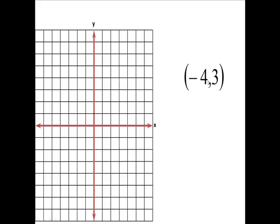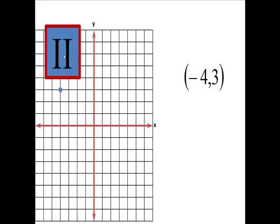If you had a point that's 4 to the left and up 3, 1, 2, 3, 4, and 1, 2, 3, that would be in quadrant number 2.